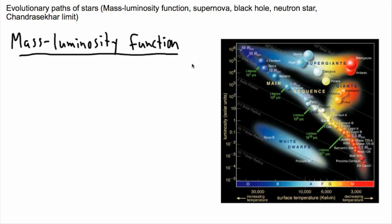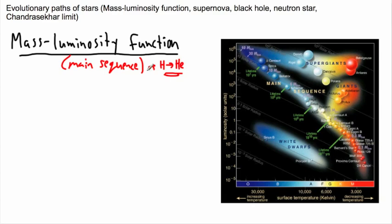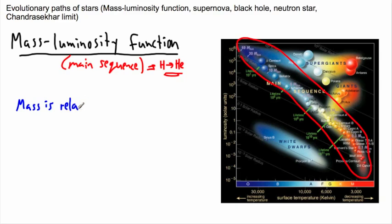The very first thing I wanted to show you is this HR diagram. If we have stars that are in the main sequence, then we have this mass-luminosity function. That works for main sequence stars. Remember what main sequence means? That means it's burning hydrogen to helium. So if a star is on the main sequence, there is a mass-luminosity function — in other words, mass is related to luminosity.